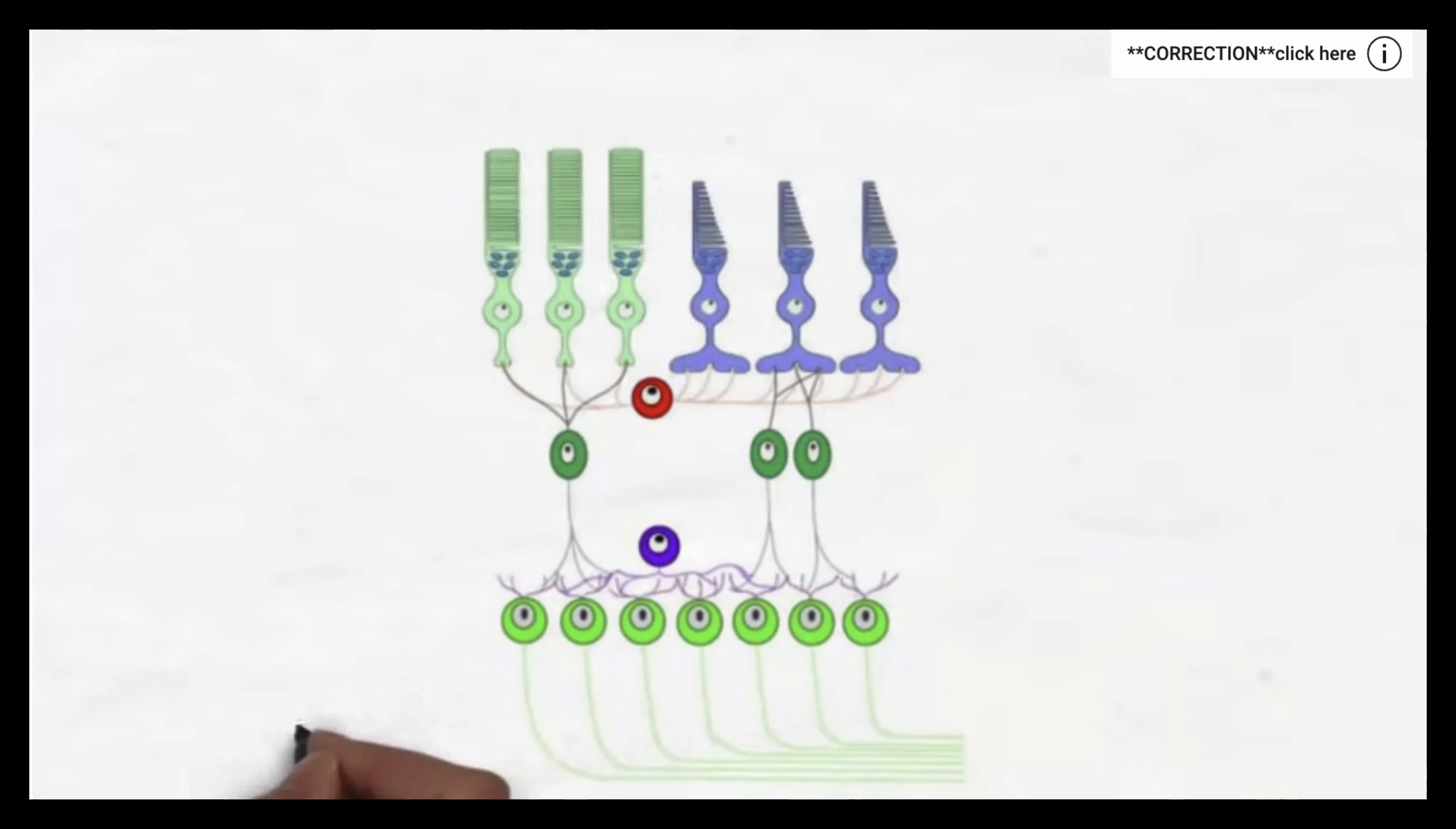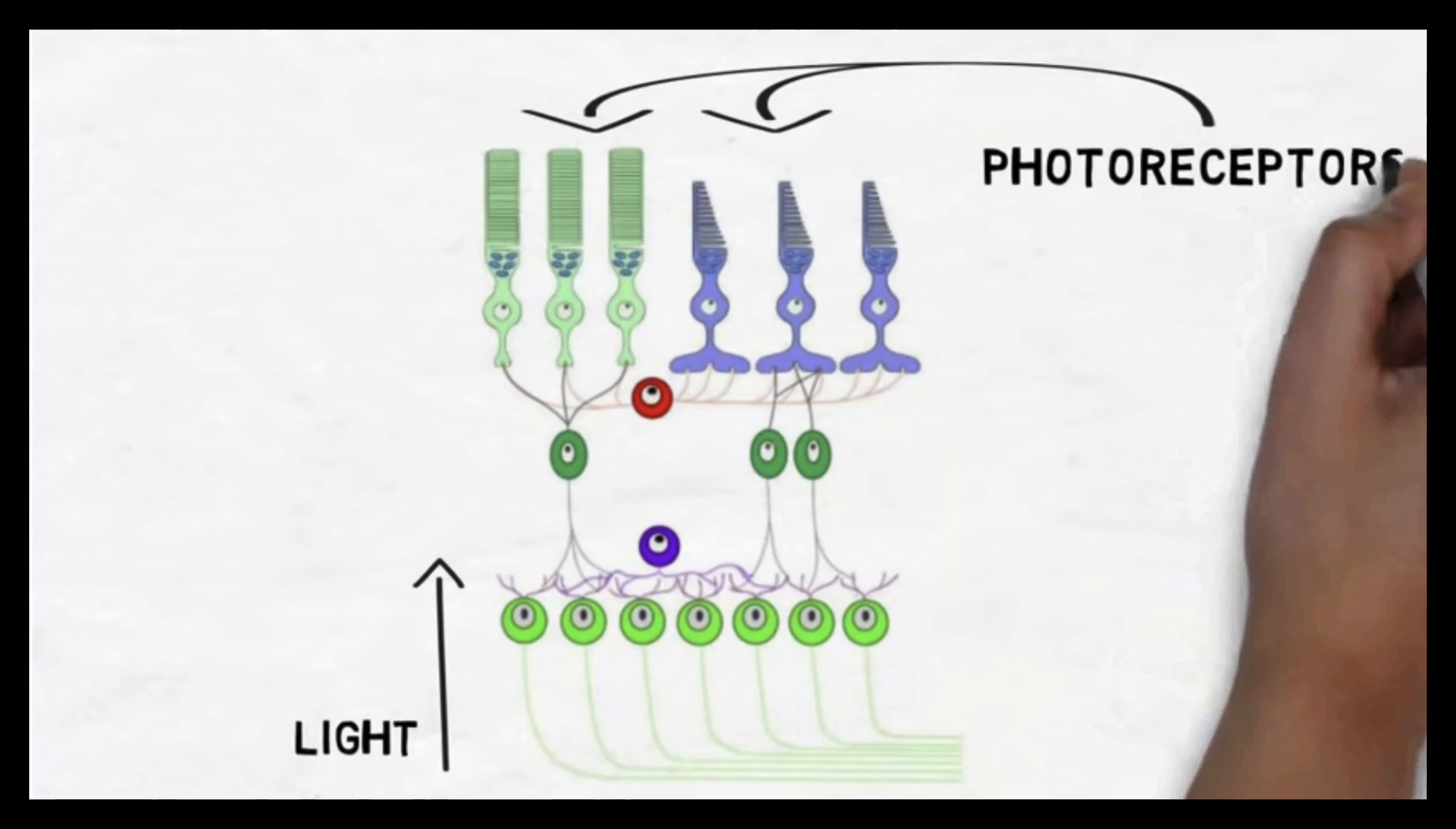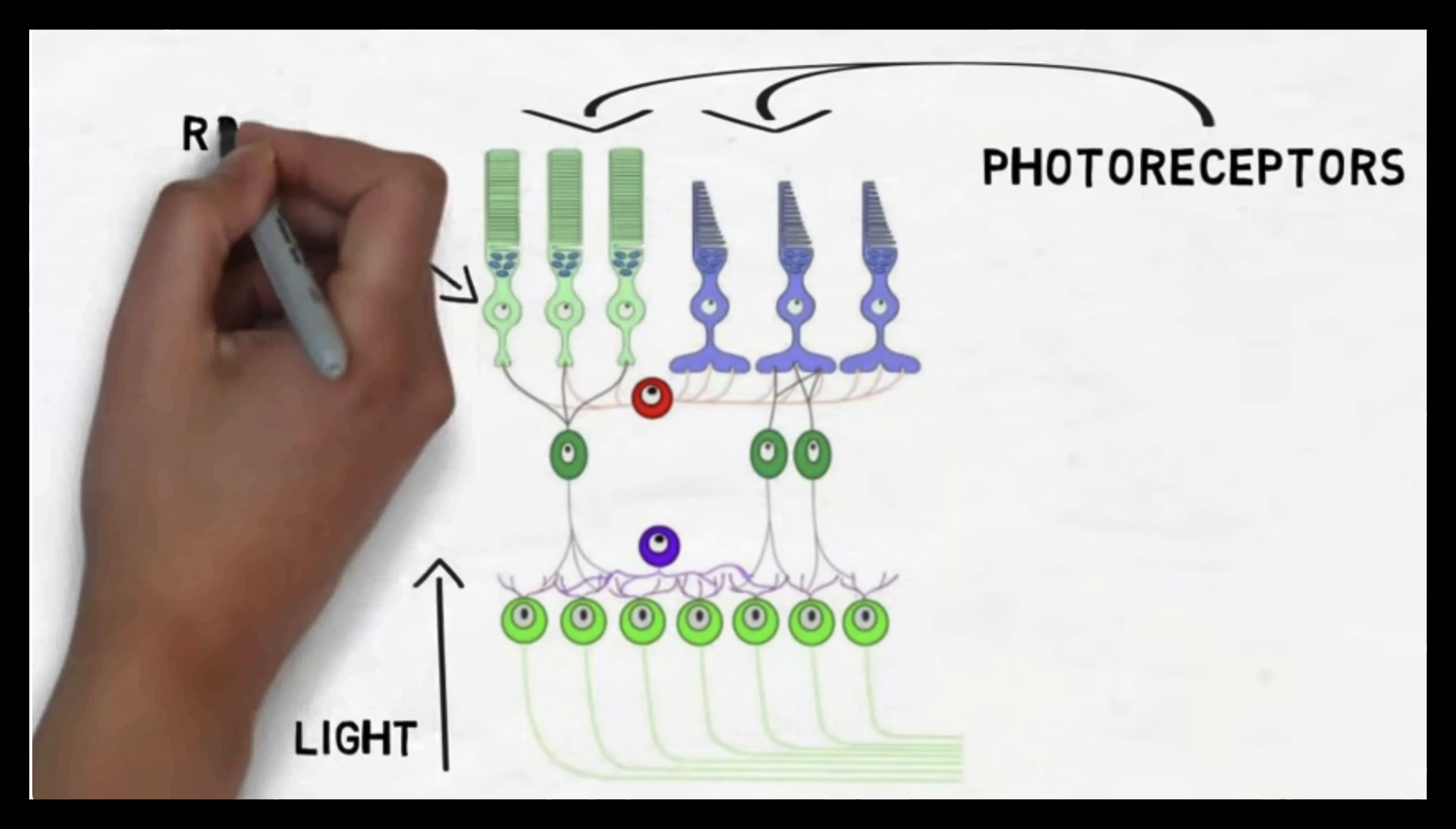The cells of the retina that detect and respond to light, known as photoreceptors, are located at the very back of the retina. There are two types of photoreceptors: rods and cones.